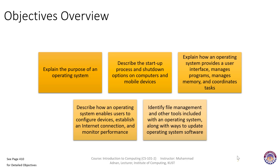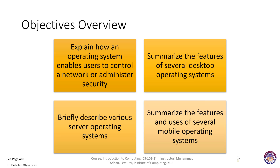We are also going to describe how an operating system enables users to configure devices, establish an internet connection, and monitor performance. We will identify file management and other tools included with an operating system, along with ways to update operating system software. Additionally, we will explain how an operating system enables users to control a network and administer security, summarize features of several desktop operating systems, server operating systems, and mobile operating systems.